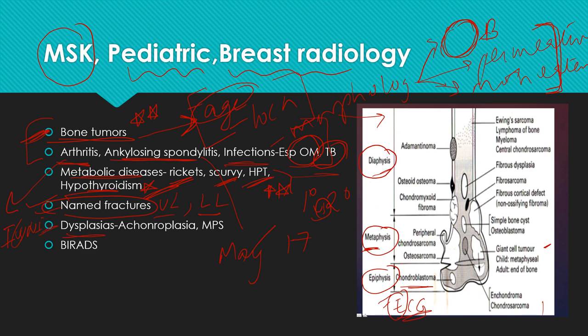There are a wide variety of dysplasias, but the ones to know are achondroplasia and mucopolysaccharidosis — their imaging appearances and associated signs. For breast radiology, BI-RADS categorization is very important.